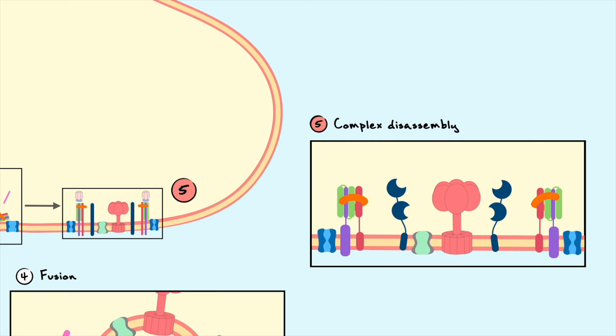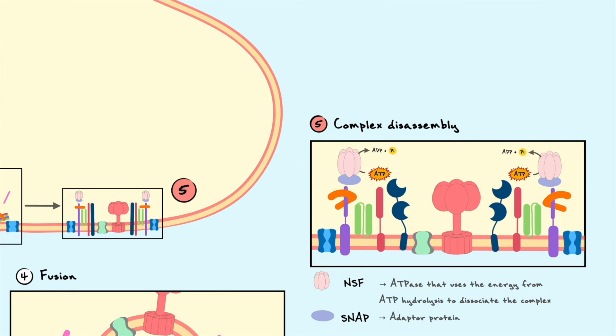Regardless of how the vesicles are recycled, the snare complex must be disassembled after fusion by two important proteins, named NSF and SNAP. NSF is an ATPase that binds to the complex via an adapter protein SNAP and dissociates the complex with the energy released by ATP hydrolysis.